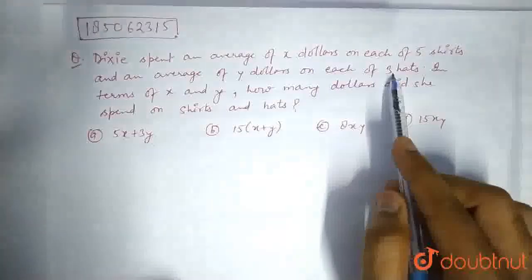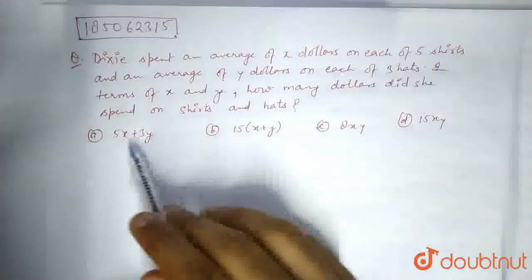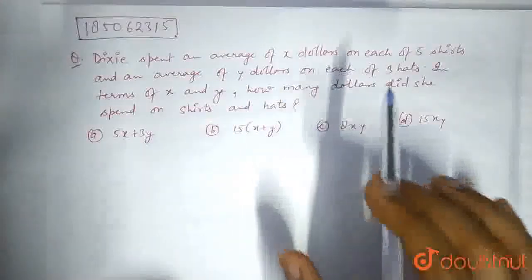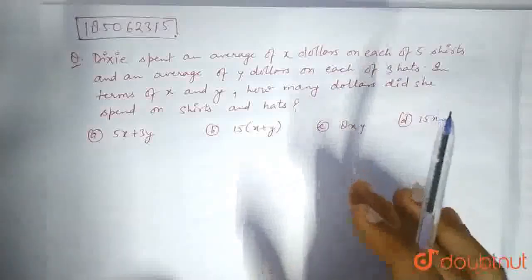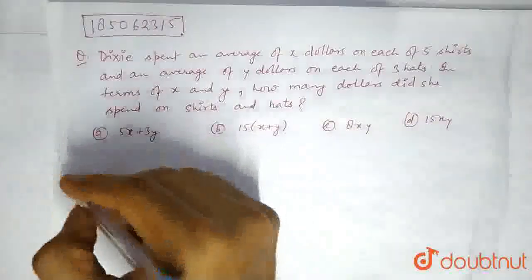So in all, the total amount would be 3Y. So the total expenditure that she would be paying for shirts and hats would be...